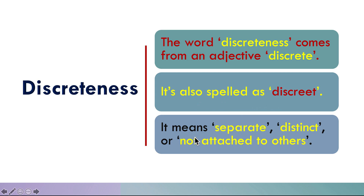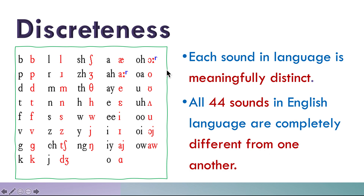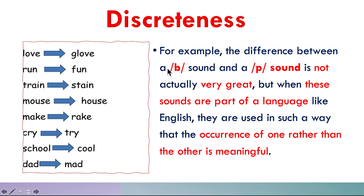Discreteness means separate, distinct, or not attached to others. Each sound in language is meaningfully distinct. All 44 sounds in the English language are completely different from one another, and these sounds are of course completely different from one another and meaningfully distinct.